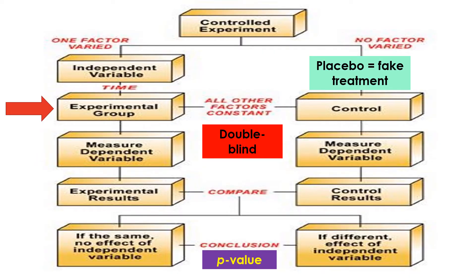Here's a quick summary of the controlled experiment. You start with an experimental group and a control group. The experimental group gets the independent variable — the thing the experimenters are manipulating, which is the supposed cause. The control group gets a fake treatment called a placebo. You make sure it's double blind: the subjects and the experimenters don't know which group they're in. At the end, you measure the dependent variable — the effect you're trying to find out if it's influenced by the independent variable. Then you compare your results and calculate a number called the p-value.